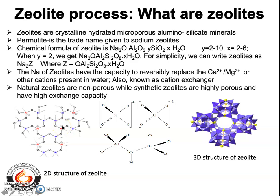This net negative charge is balanced by the presence of alkali or alkaline earth metals — sodium ions, potassium ions, and lithium ions — that are trapped in the porous network structure and loosely bound by weak electrostatic forces. The sodium trapped within the cavity can be reversibly replaced by calcium, magnesium, or other cations present in water, which is why the zeolite process is also known as a cation exchanger.